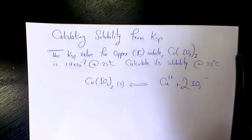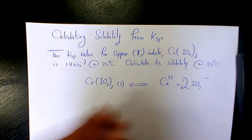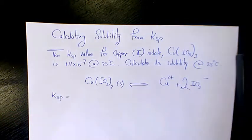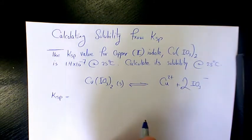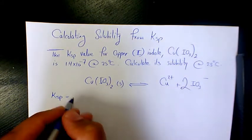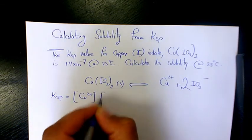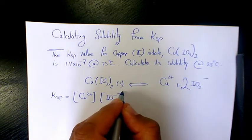You have two of the iodate and one copper. So when you want to find out the relationship between Ksp, which is the solubility product constant, and the concentration of ions, it's going to be Ksp equals copper times iodate to the power of 2.